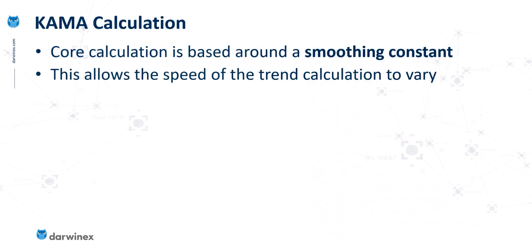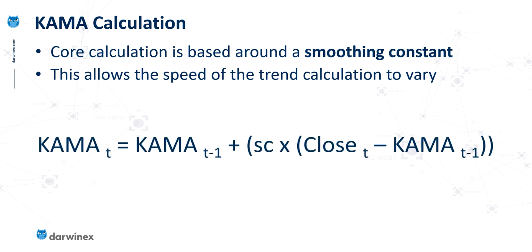What we need to do next is look at how the calculation enables this. The whole basis is on what's called a smoothing constant, and it's this smoothing constant that enables the speed of the trend to vary. This is what the equation looks like, and this is where the smoothing constant fits into it. It's a little simpler than it looks — it just means that the current KAMA value uses the previous value, and then either subtracts or adds a value depending on whether the close price is higher or lower than that previous value. But the rate at which it does that is determined by the smoothing constant.